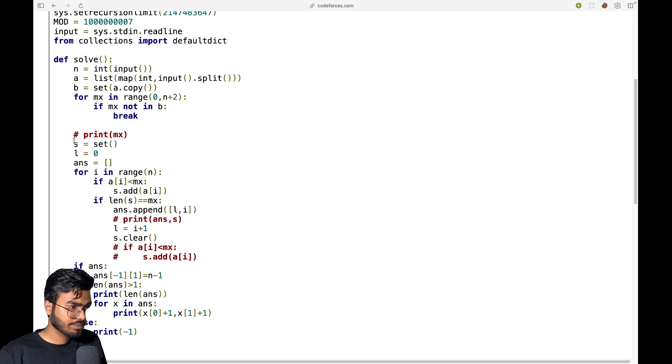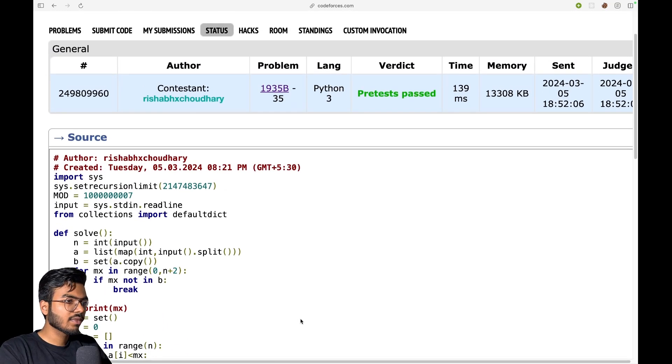Once I have the mx, then I'm doing this. I'm traversing it and dividing it into segments, so from L to i I have that. Now after this, if my answer is that, then obviously the last index has to be n-1. And then if my length of answer is greater than one, then I can do this, otherwise I will not do it. So we have that. Now this is the code.